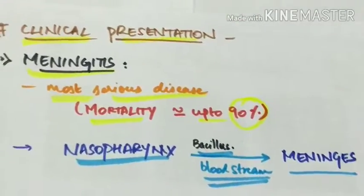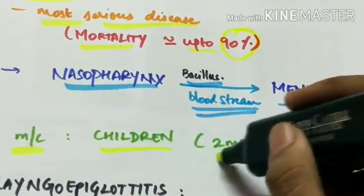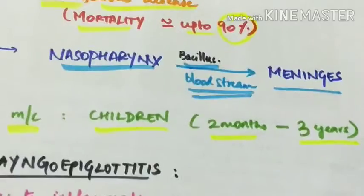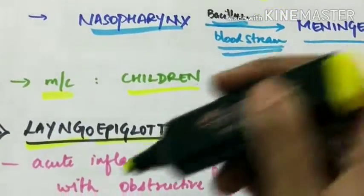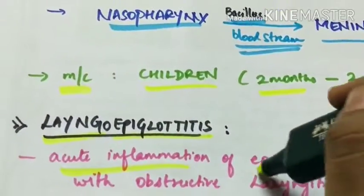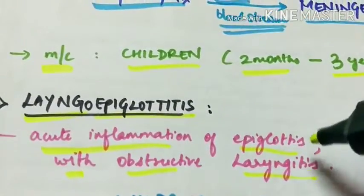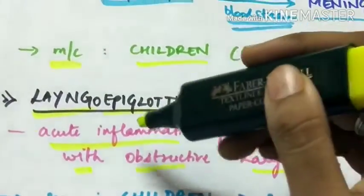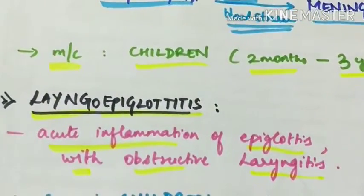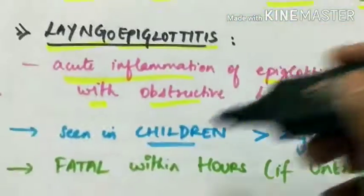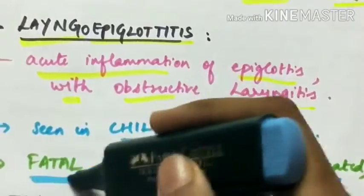This most commonly occurs in children in the age group of 2 months to 3 years. Next is Laryngoepiglottitis which is acute inflammation of epiglottis with obstructive laryngitis. This is seen in children more than 2 years of age. If untreated, this is fatal within hours.